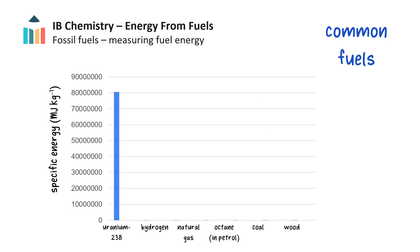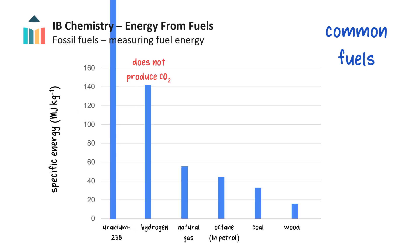The graph shows the specific energies of some common fuels in megajoules per kilogram. Uranium-238 provides vastly more energy per kilogram than other fuels. Let's zoom in on the other fuels. We can see hydrogen has high specific energy, and hydrogen doesn't produce carbon dioxide when it is combusted, due to its lack of carbon.